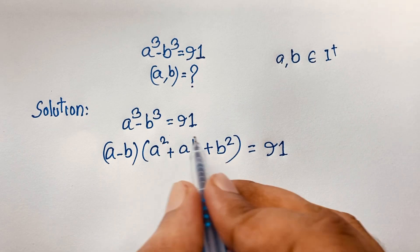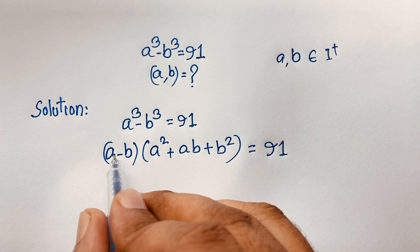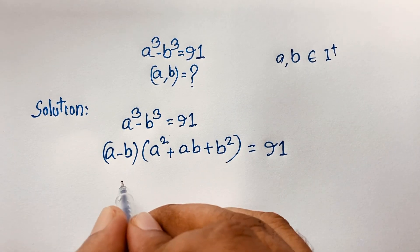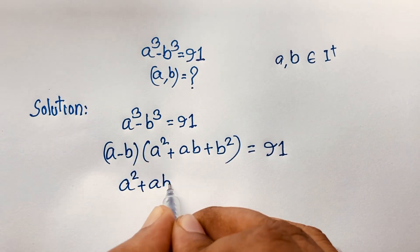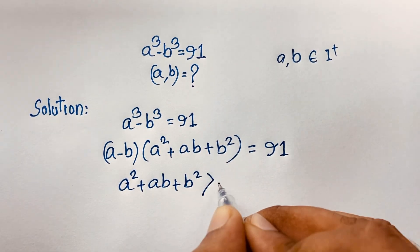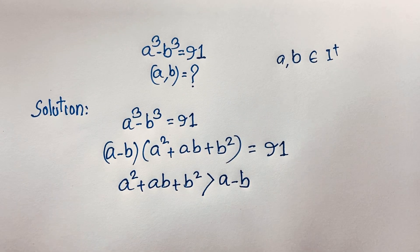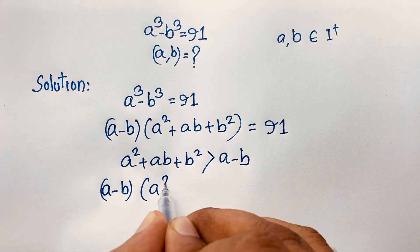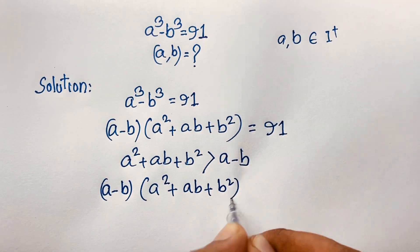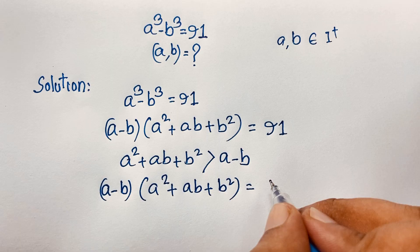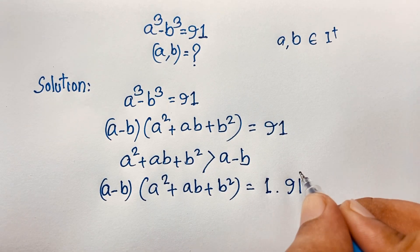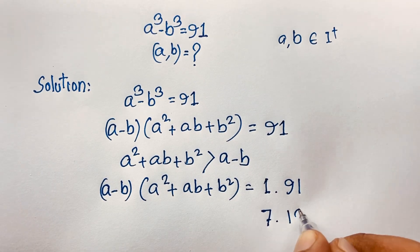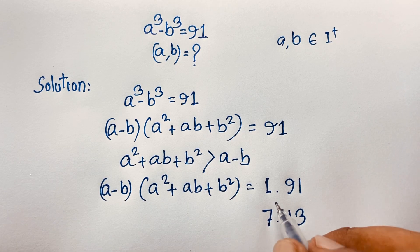Notice that a² plus ab plus b² is always greater than (a minus b), since it contains squared terms and a positive product. So when we factor 91, the possibilities are 1 times 91 or 7 times 13. The case 91 times 1 is not possible because the larger factor must be a² plus ab plus b², and 91 is not prime.